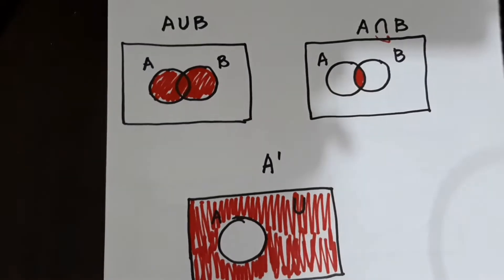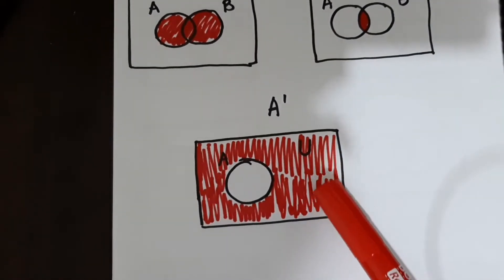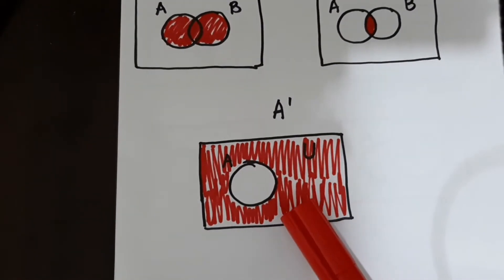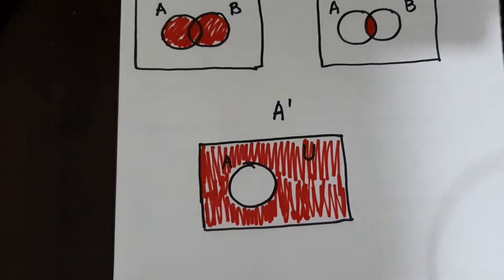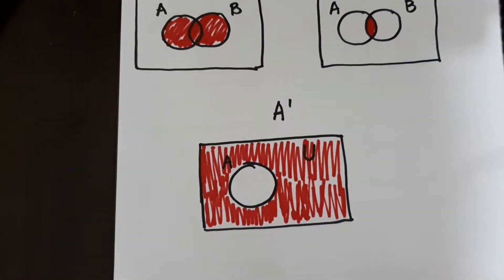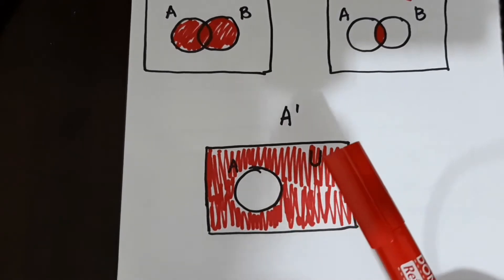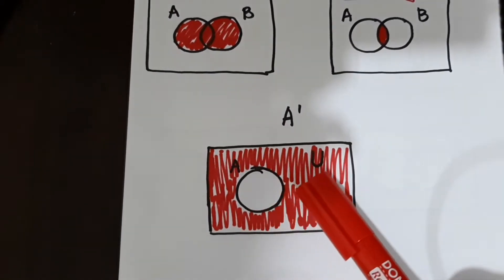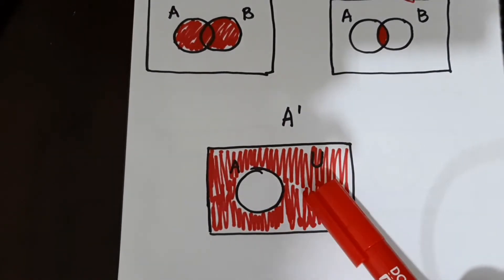And another is the complement of A. So another term kasi sa complement is not A. So meaning yung A lang or yung set A lang ang walang shade.